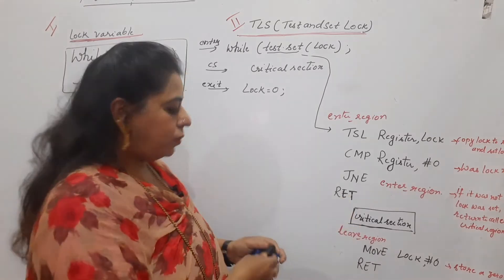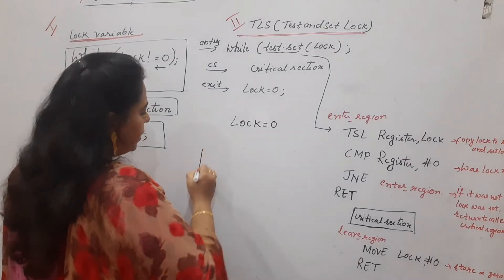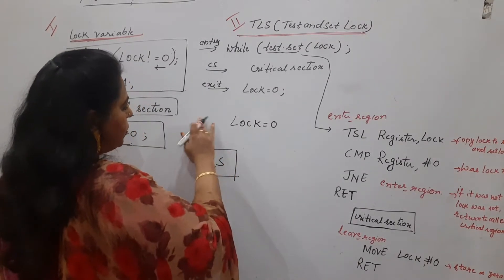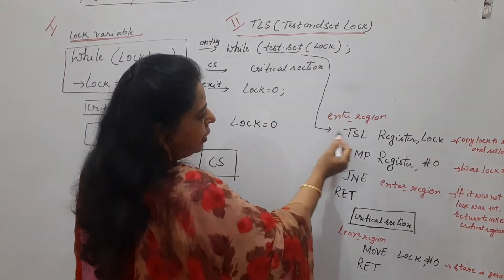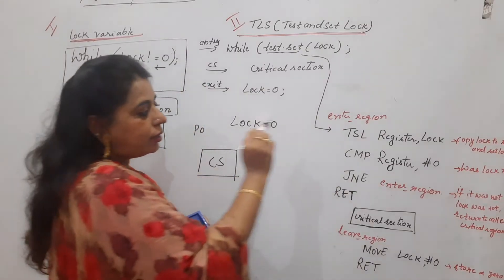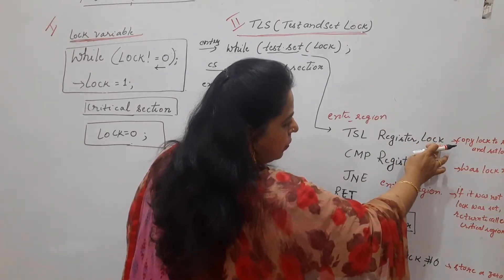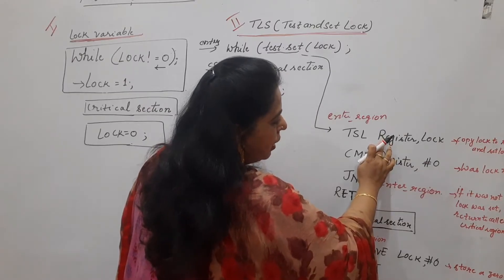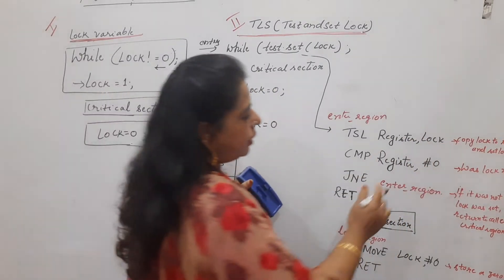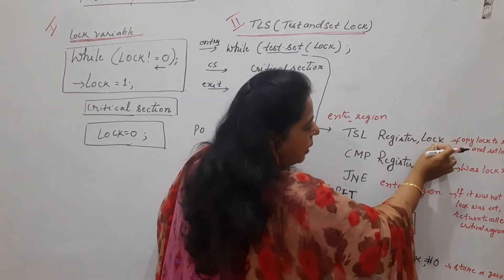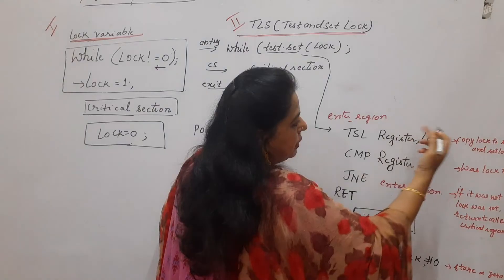To understand that, start with the initial value: lock is initially set to 0. Now there is a critical section, and process P0 wants to enter it. It will call the enter_region subroutine. In that, the instruction is TSL register, lock. The meaning of this instruction is: whatever the current value of the lock variable is, it is saved into the register, and then the value of lock is set to 1. So this instruction copies the lock value to a register and sets lock to 1.